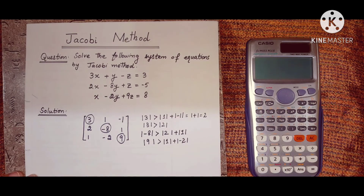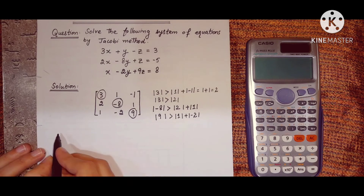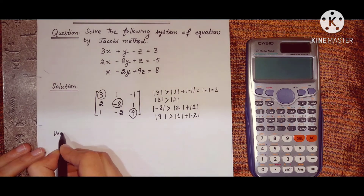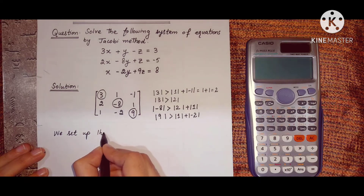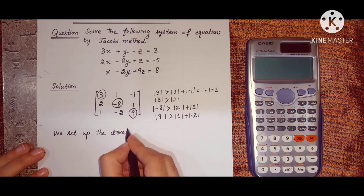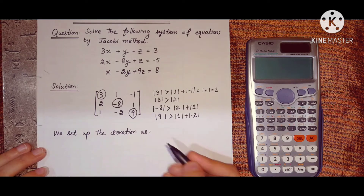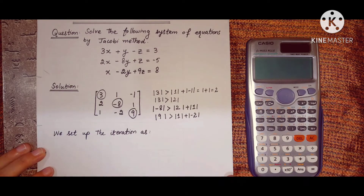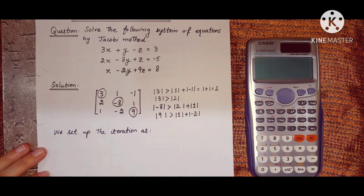Now we set up the iteration. I'm not going to write out the general formula — I'll explain it step by step so you will learn how to solve the system using the Jacobi method.